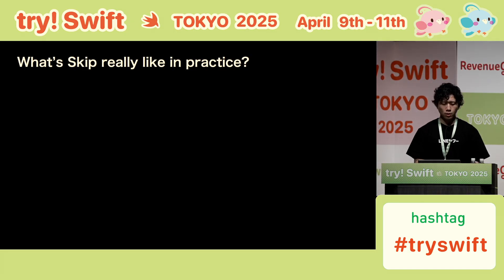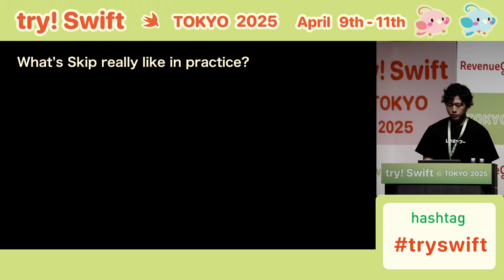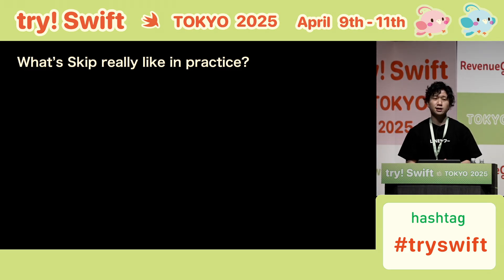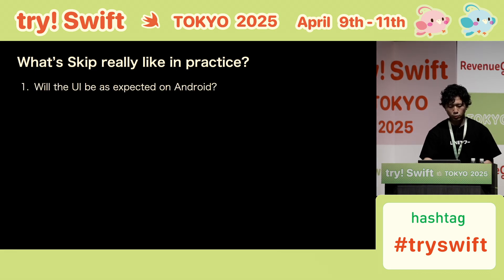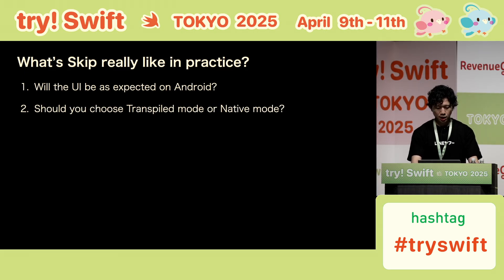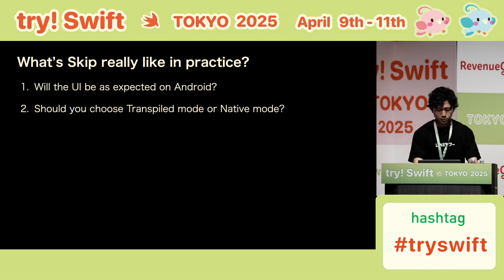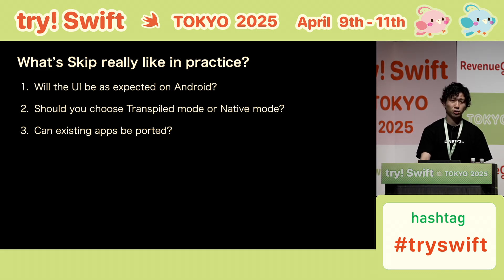So what's Skip really like in practice? I will cover three points that you might be interested in. First, will the UI be as expected on Android? Second, should you choose transpile mode or native mode? And third, can an existing app be ported?